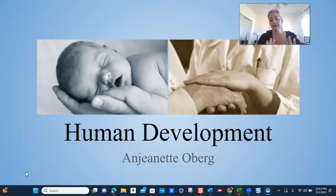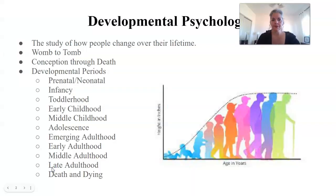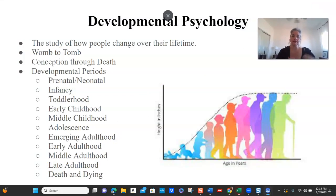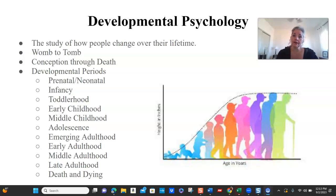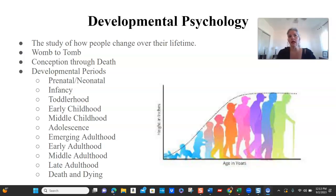Hi everyone, it's Ajannette, and I'm here to cover Chapter One for our Human Development OER textbook. First, let me introduce you to the field of developmental psychology. We're a branch within psychology, and our focus is looking at how people change over their lifespan. We cover the entire lifespan — from womb to tomb, from conception through death — studying how people change physically, cognitively, socially, and emotionally. Those are what we call developmental domains.